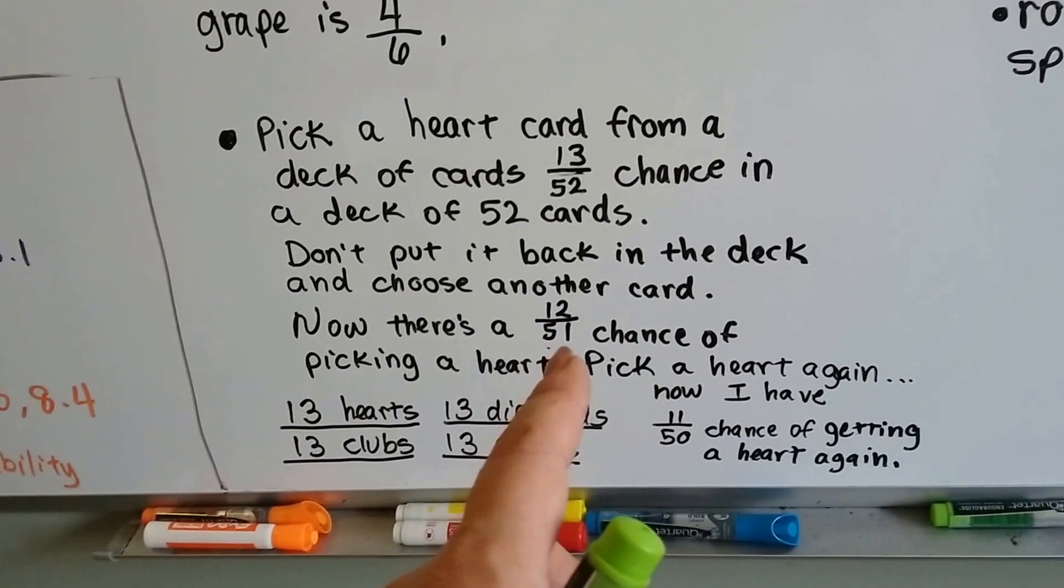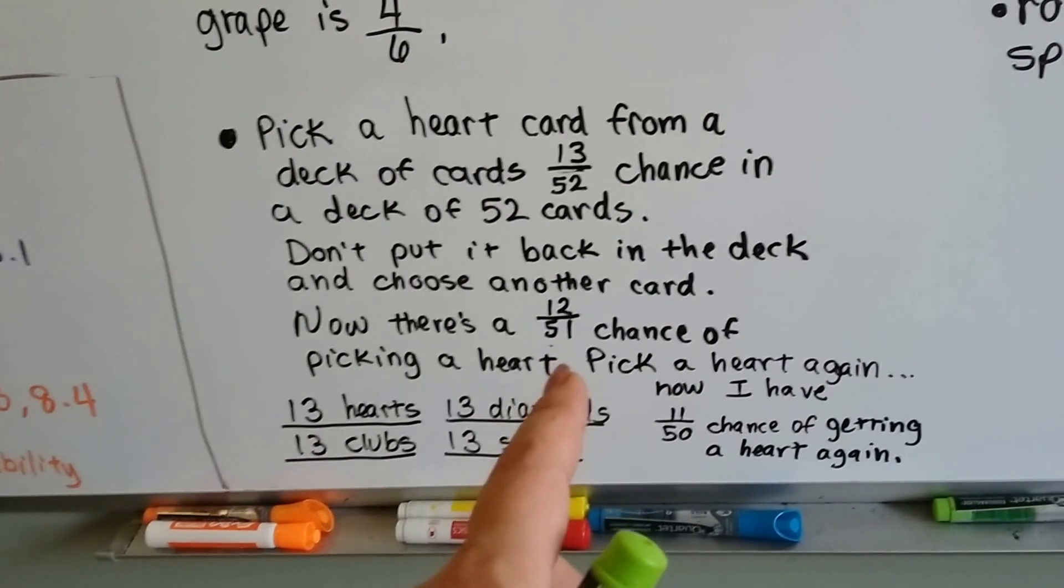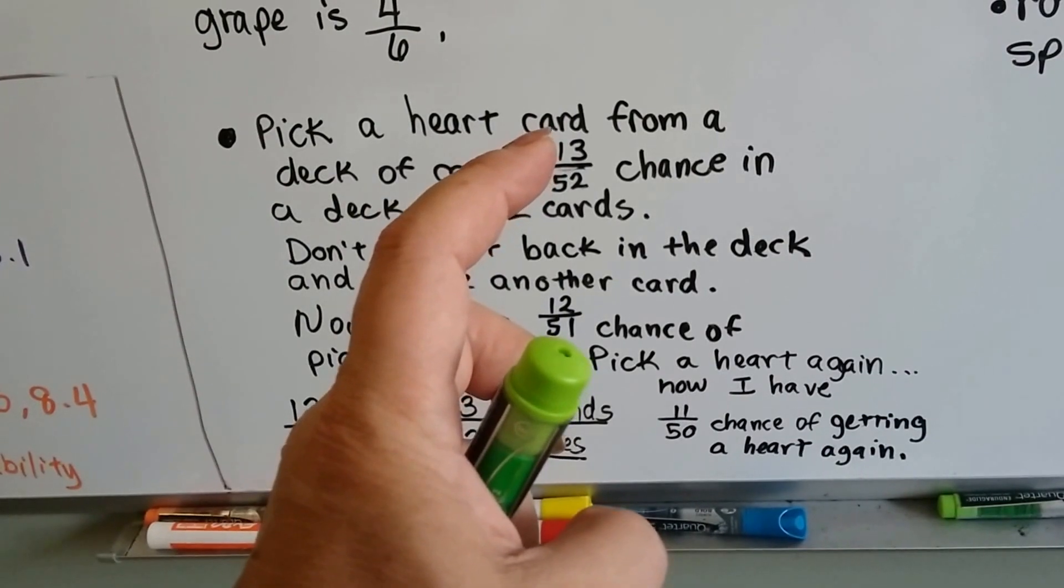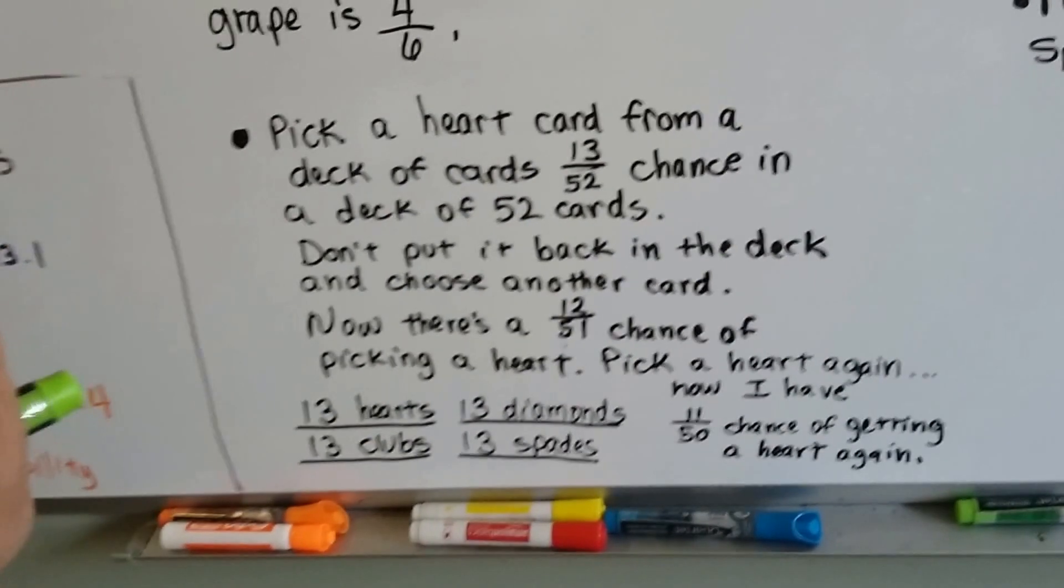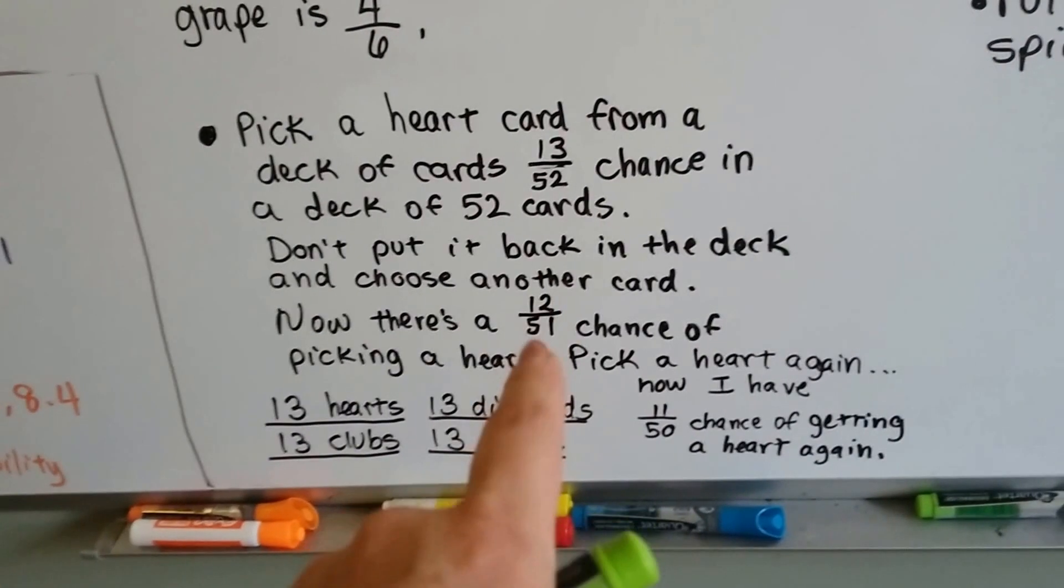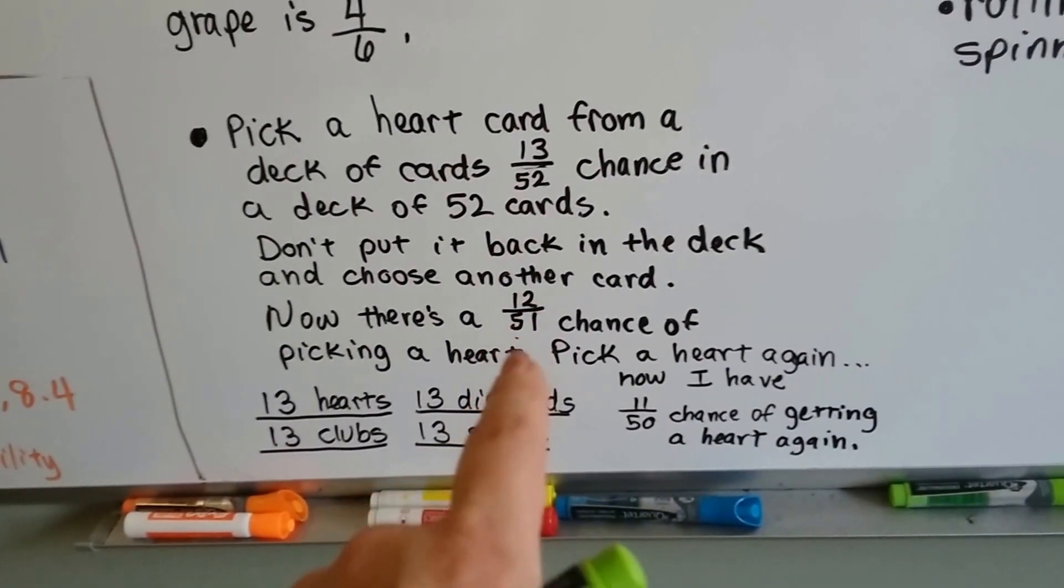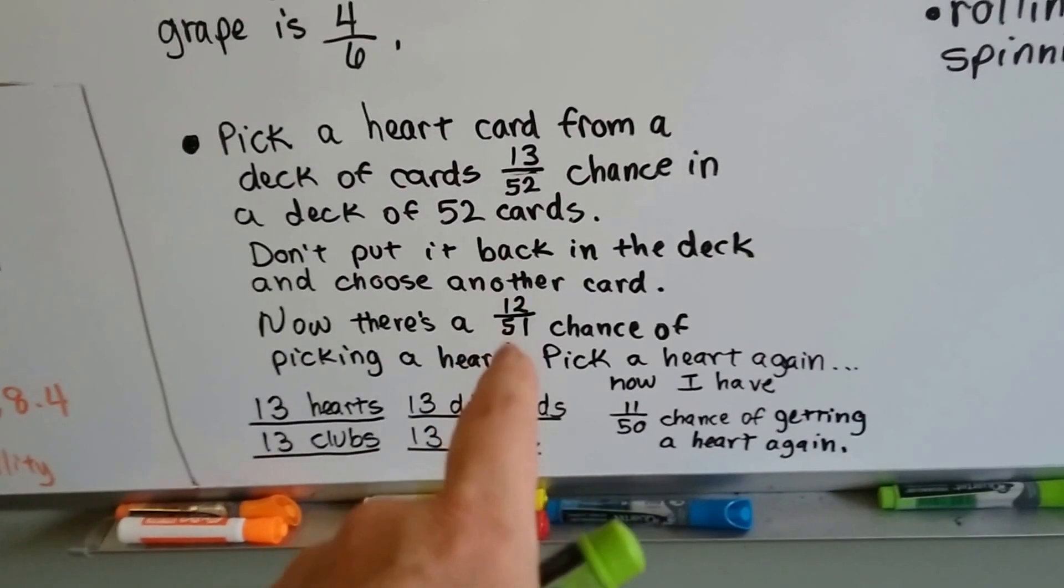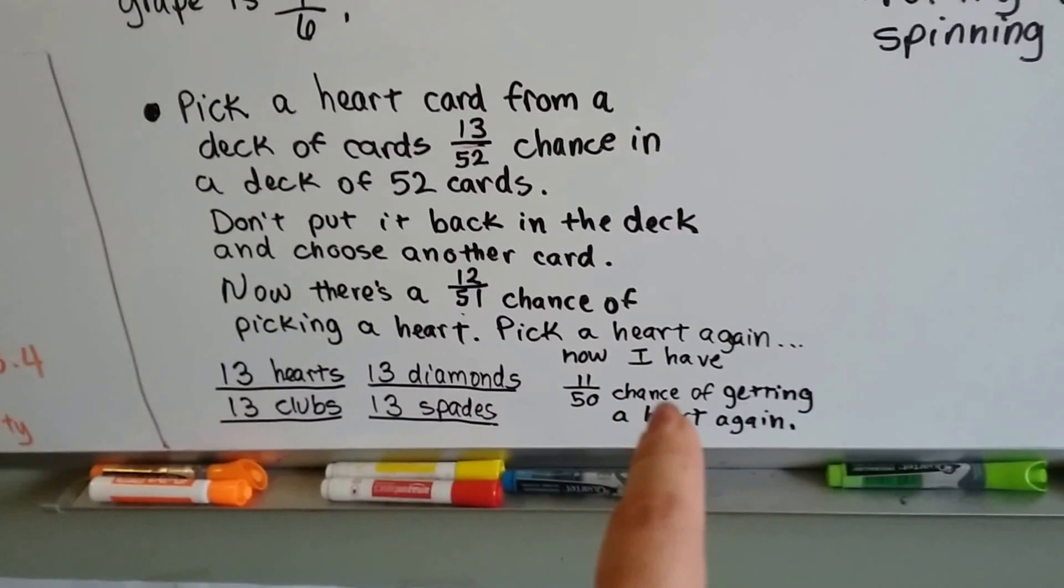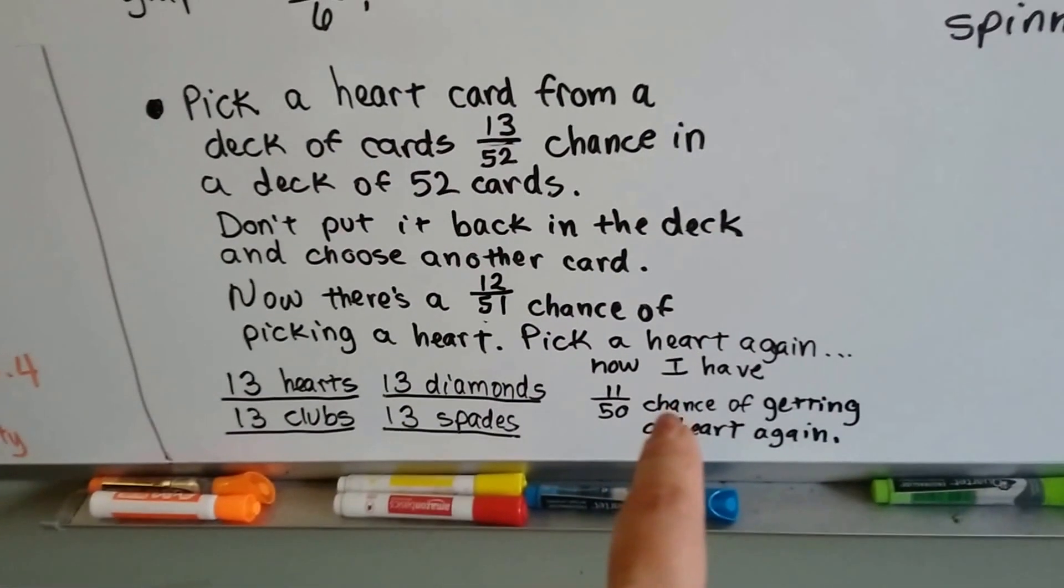Well, I've got a 12 out of 51 chance of picking a heart card this time, because now there's only 12 hearts and there's 51 cards. Because I put that one on the side on the table. I didn't put it back in the deck. So see how I changed the proportion? I changed the probability of getting a heart card. Now let's say I pick a heart card again. Just luckily I get a third heart card.